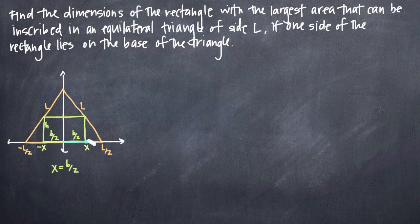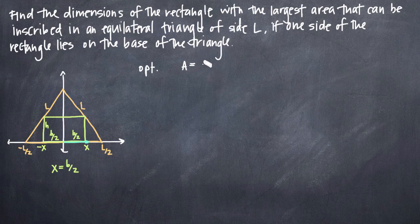Our next step is to come up with a constraint equation and an optimization equation. Whenever we're dealing with an applied optimization problem, we always need both. The optimization equation will be an equation for the area of the rectangle — area equals base times height — since we've been asked for the rectangle with the largest area. Our constraint equation will have to relate B, H, and L. The equation we'll use is an equation for similar triangles.